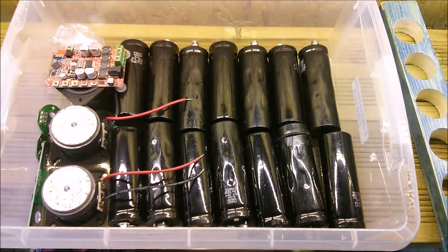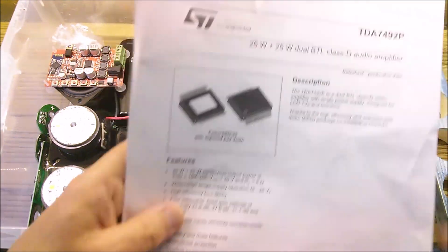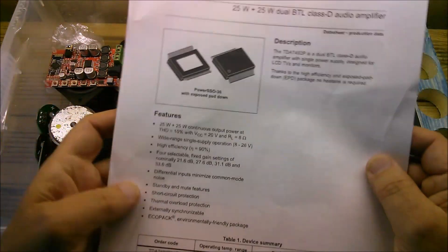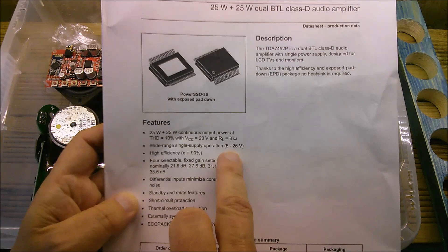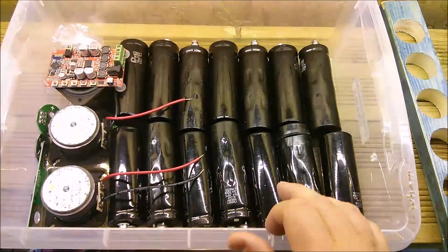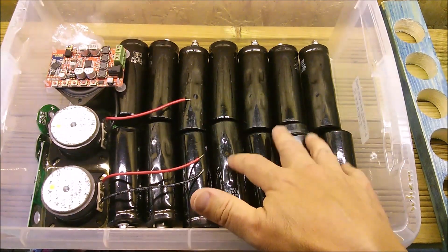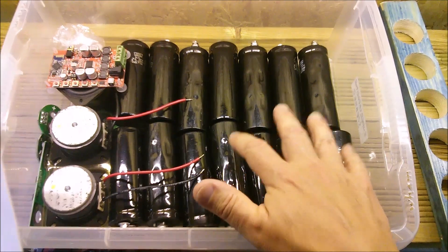The voltage range on the chip that's on the Bluetooth amp has a wide single supply operation of 8 to 26 volts. So I wanted to use eight of these 2.5 volt capacitors to get about 20 volts.